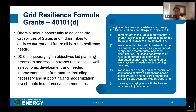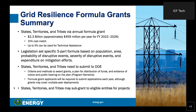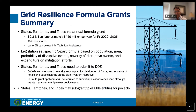It's also an opportunity to bring together good-paying jobs across the country. Going into more detail on the formula grant program: states, tribes, and territories will receive funding and allocations based upon a five-part formula focusing on population, area, probability of disruptive events, the severity of these events, and expenditure on mitigating efforts. There is a 15% cost match for states, tribes, and territories, and 5% of allocations can be used for technical assistance as well as administrative program fees.